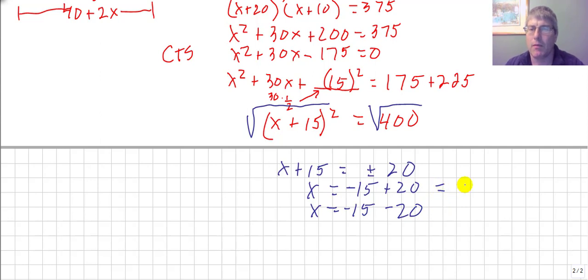So it's either 5 or it's negative 35. Well, we're not going to have a negative width. So our width is 5.